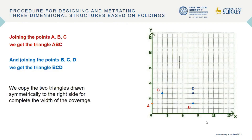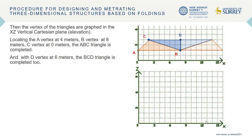Joining the points A, B, C we get triangle ABC, and joining the points B, C, D we get triangle BCD. We copy the two triangles drawn symmetrically to the right side to complete the width of the coverage. Then the vertices of the triangles are graphed in the xz vertical Cartesian plane — the elevation.